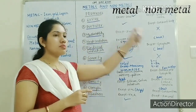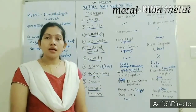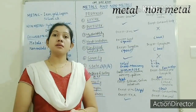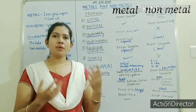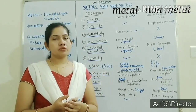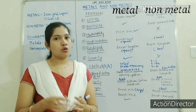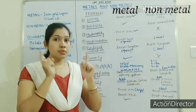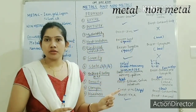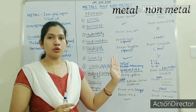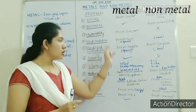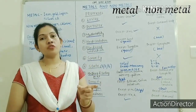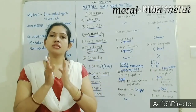So these are some of the properties based on which we can identify whether something is a metal or a non-metal. Just remember all of these things and remember the exceptions carefully — the exceptions are very important. In the next class we will discuss the position of metals and non-metals in the periodic table.